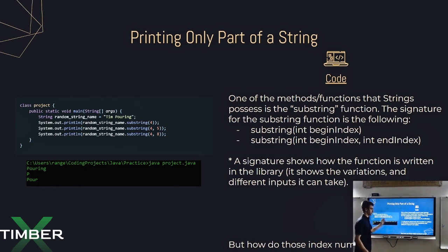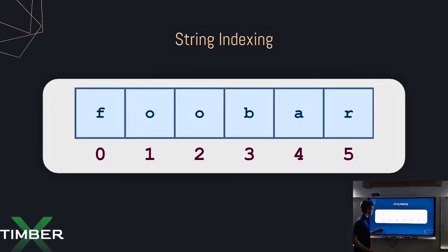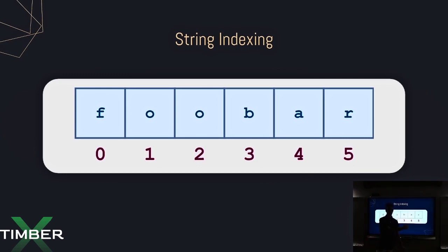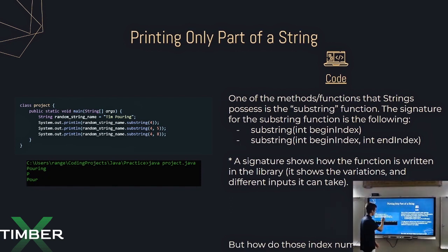But how do those index numbers actually work? This is how you index strings. You may have heard of counting from one, but in computer science you actually start at zero. So for the string "FUBAR": F is index zero, the first O is index one, the second O is index two, B is index three, and so on. Going back to the earlier example, in "Temporing": T is zero, I is one, M is two, the space is three, and P is four — so that makes sense for the substring(4) value printing the whole last name.